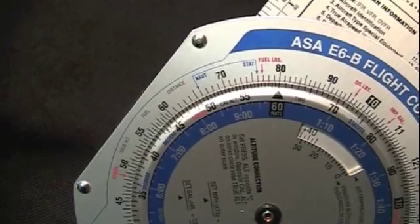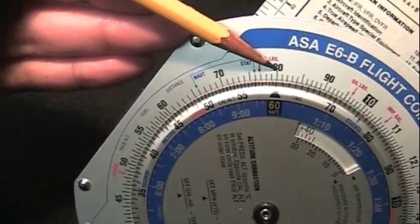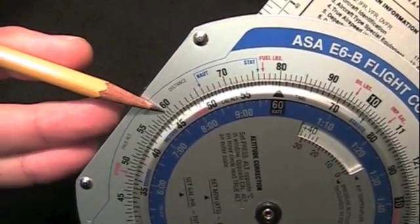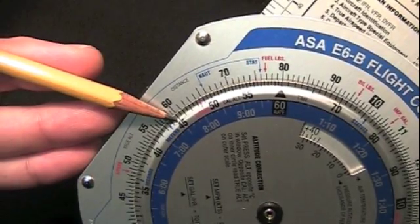For shorter distances and times, use the minute scale. At a rate of 80 nautical miles per hour, a 60 nautical mile trip will take 45 minutes.